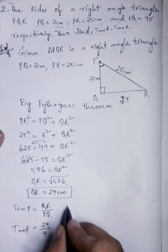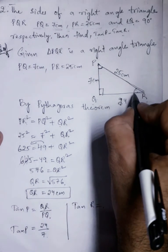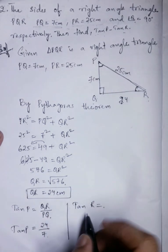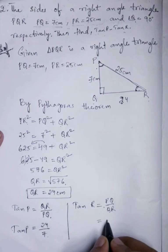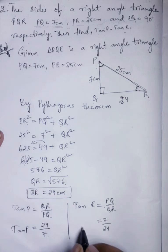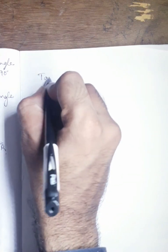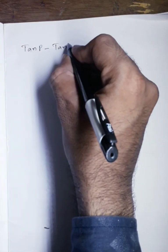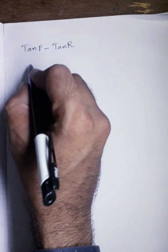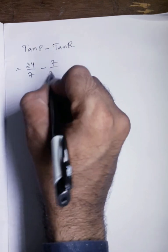So the value of tanP is 24 by 7. Next we have to find the subtraction of this. So tanP minus tanR. TanP is 24 by 7 minus tanR is 7 by 24.